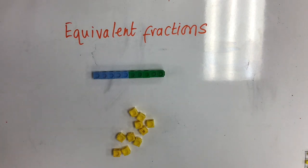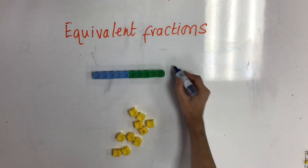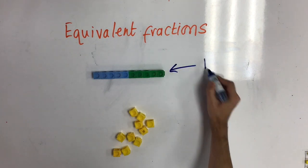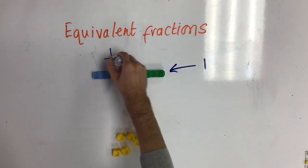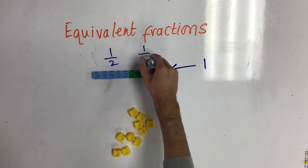Let's take a look at how we can think about equivalent fractions in an abstract way. Here I have one whole, and we can see that half is blue and half is green.